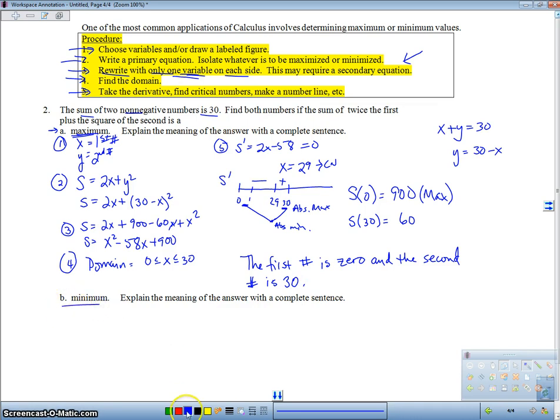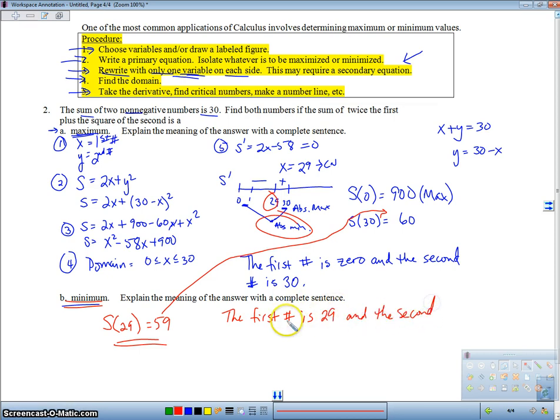Okay, now for part B, we're looking for the minimum. So the minimum, we're just using all the same work here, and we have this value here, which was our critical number. So we're looking for s sub 29, and s sub 29 is going to be 59. Now, we really actually don't have to do this work. I just wanted to illustrate that it is between 900 and 60, which is going to give us a minimum. So we're going to say that the first number is 29, and the second number is 1. And we get that by plugging in 29 in here. 30 minus 29 is 1.